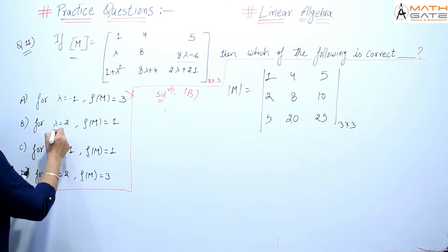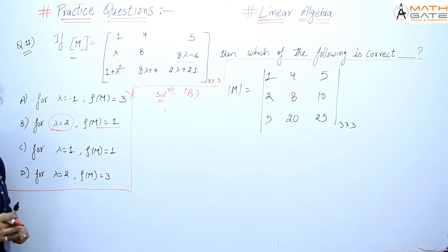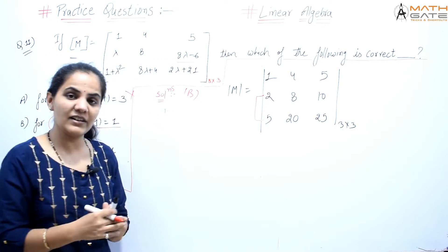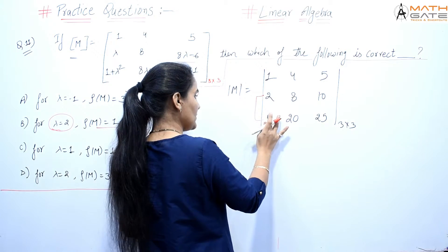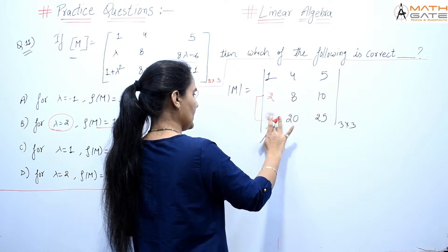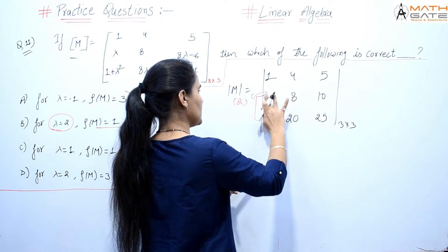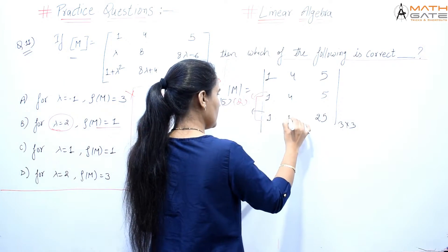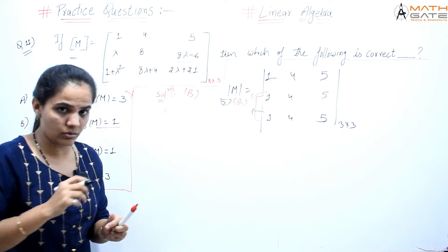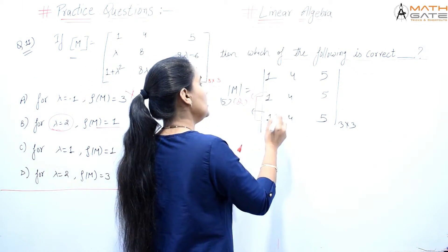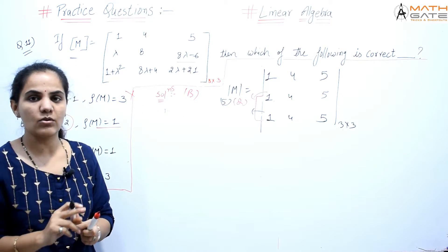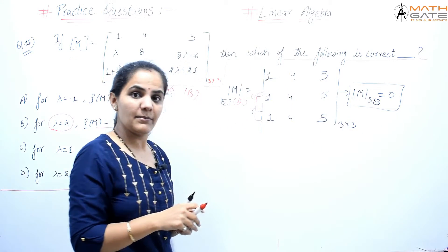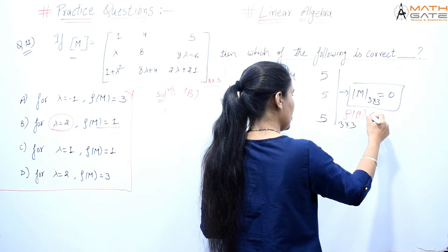Option B says that if lambda equals 2, rank should be 1. Look at this matrix carefully. You can see that all three rows are proportional — each row is a multiple of [1, 4, 5]. Row 2 is 2×[1, 4, 5] and row 3 is 5×[1, 4, 5]. So all three rows are identical in direction, meaning they are linearly dependent. This means the 3x3 determinant is definitely 0, so the rank is less than 3.